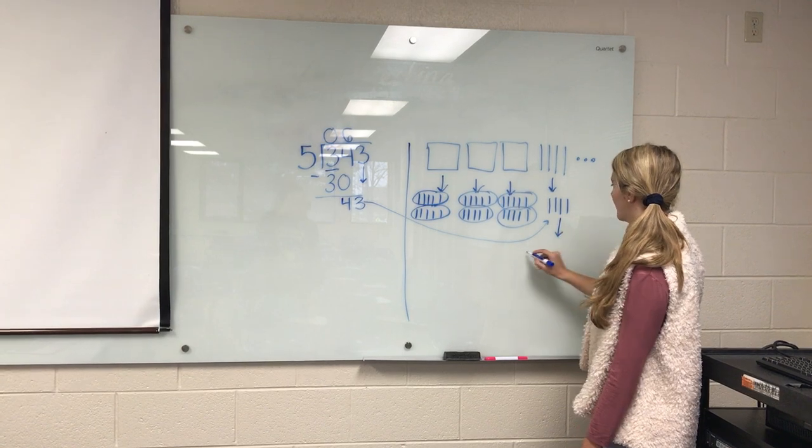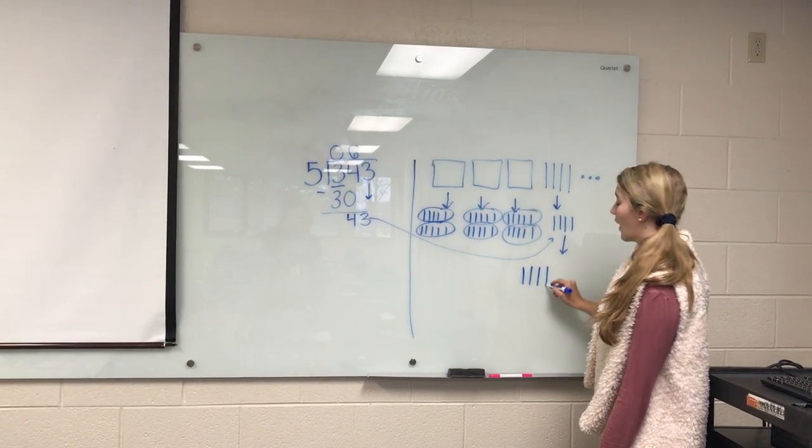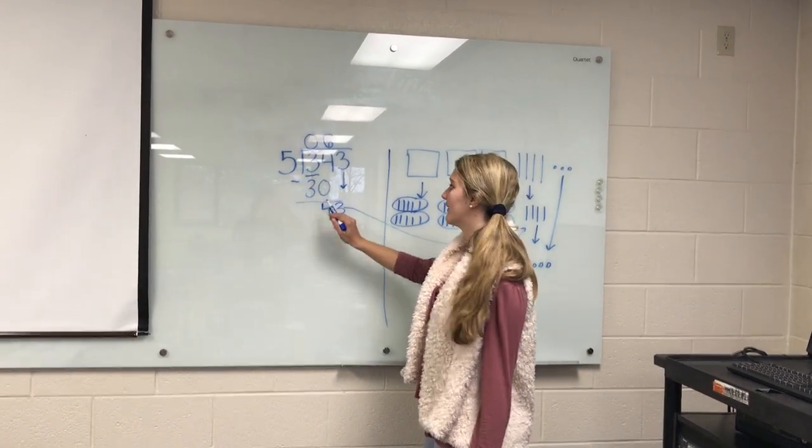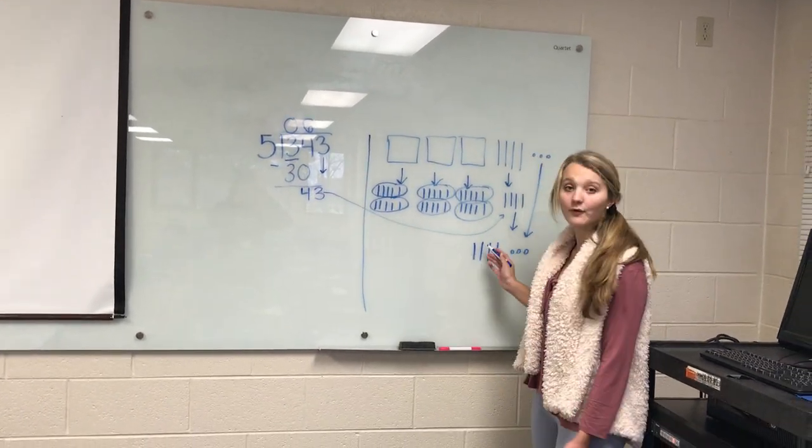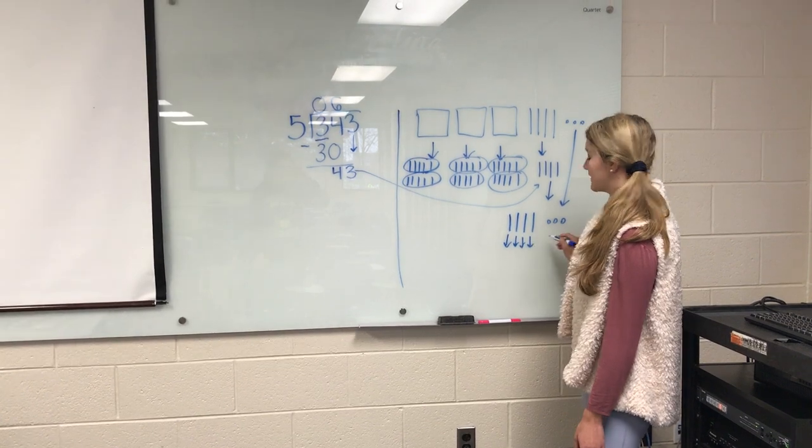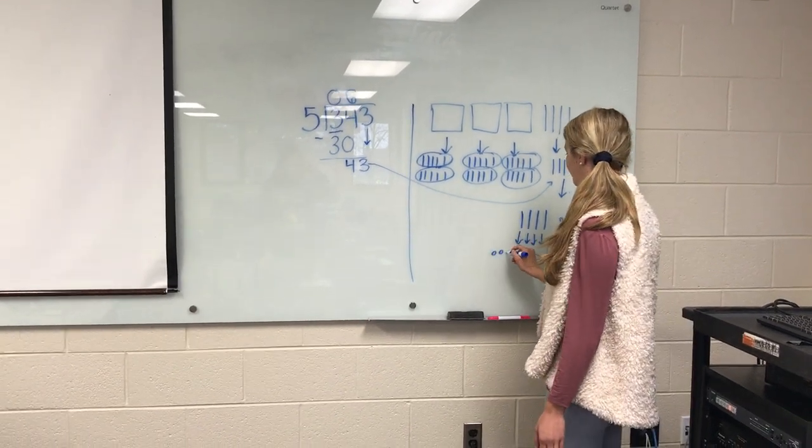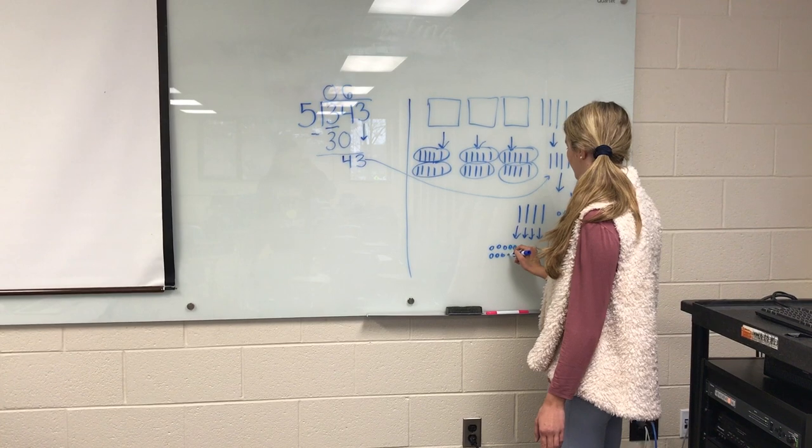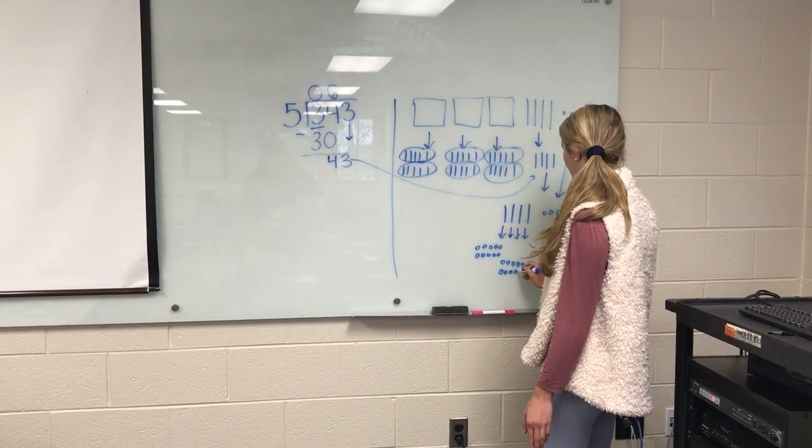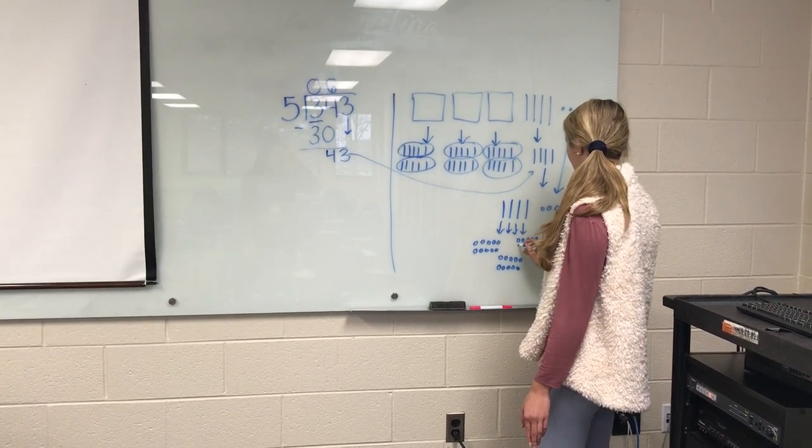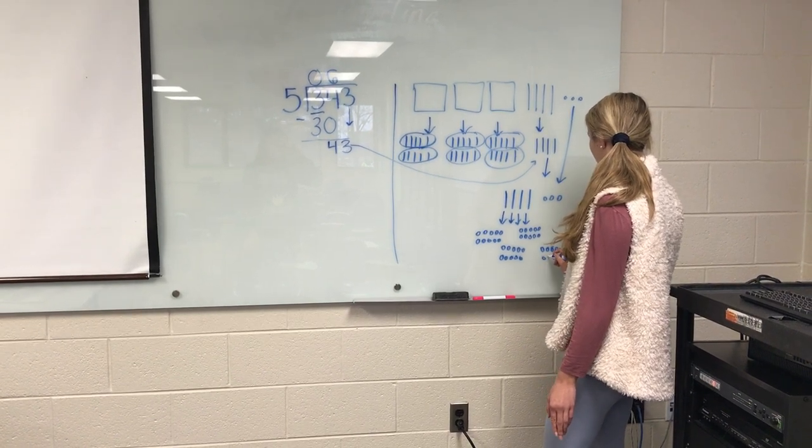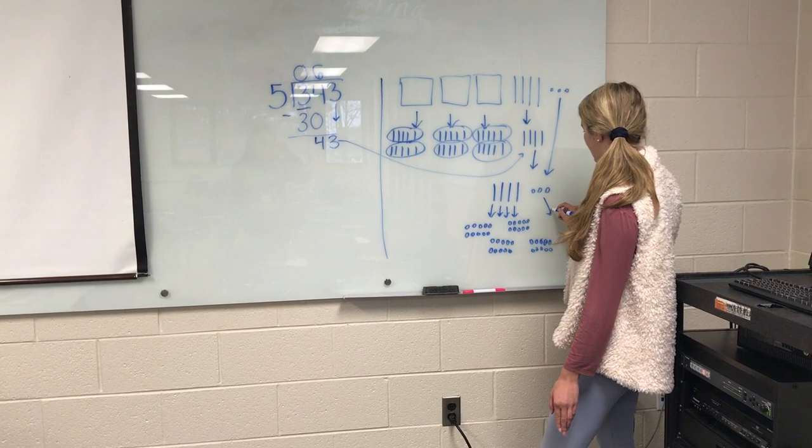Right now we have these 4 longs and these 3 ones left over. We cannot make 5 groups from the 4 tens. There's only 4, like we have previously established. So we are going to have to regroup these into 1s.